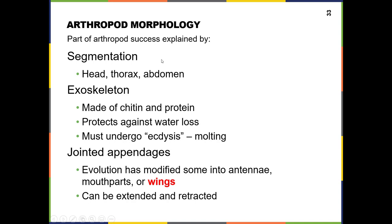The morphology of arthropods includes a segmented body. They at least have a head, thorax, and abdomen — so at least three segments — and often they have more than that.